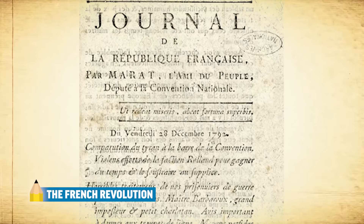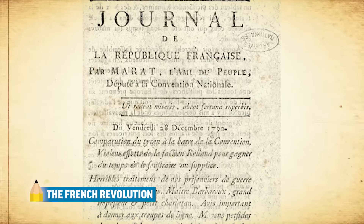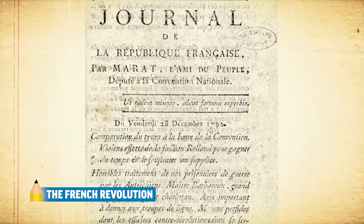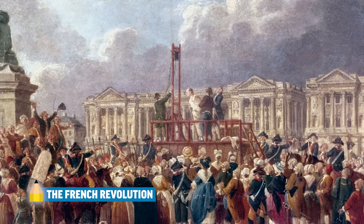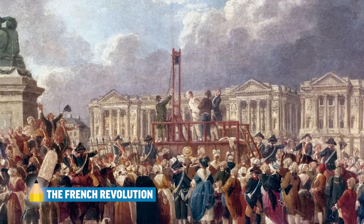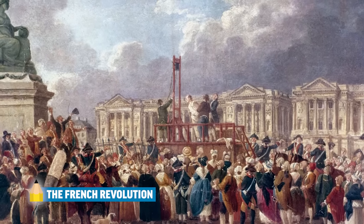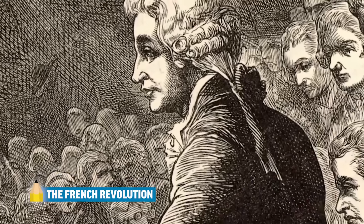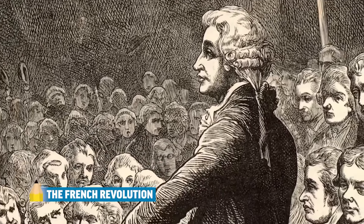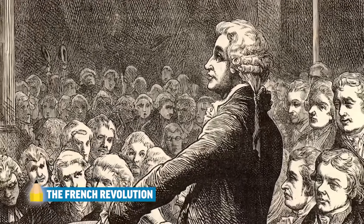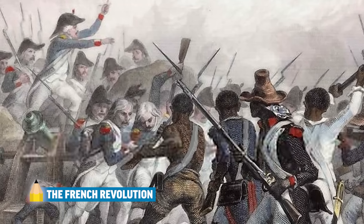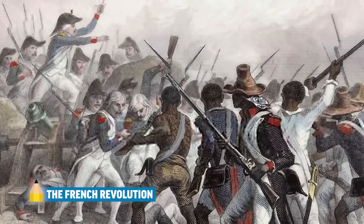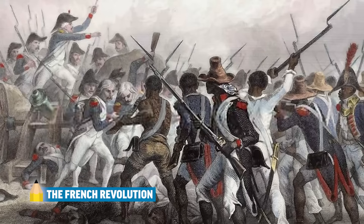Jean-Paul Marat stokes political turmoil through his newspaper, a great example of mass media calling the public to action. Robespierre's Reign of Terror leads to the deaths of thousands and ushers in mass chaos in France and in European countries watching what's happening. Critics like Burke stress the importance of adhering to traditional conservative values. But supporters of the revolution, like those in the French colony of Saint-Domingue, follow the rallying cry of liberty, equality, and brotherhood, and fight for independence, successfully gaining it in 1804.